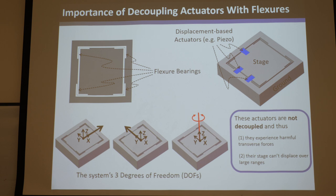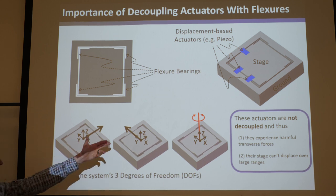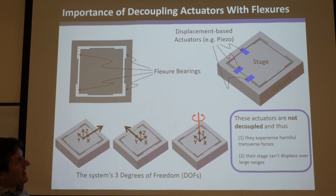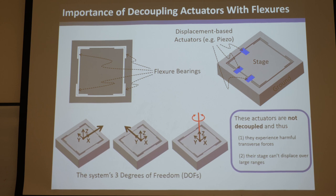Here is this famous PI flexure stage that has bent blade flexures connecting the ground to the stage, with piezo actuators and three degrees of freedom: two translations and rotation. They very wisely — this is a great flexure design and a great actuation space design. The center of mass and center of stiffness are directly aligned, so the dynamic and static actuation space are the same. You just need three actuators. They align them the best they could to make them independent, and they sell this as a nanopositioner. But the problem is the actuators aren't decoupled.